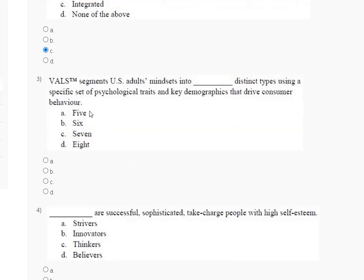Question number three: VALS segments US adults' mindsets into how many distinct types using a specific set of psychological traits and key demographics that drive consumer behavior? Options are: first — five, second — six, third — seven, fourth — eight.